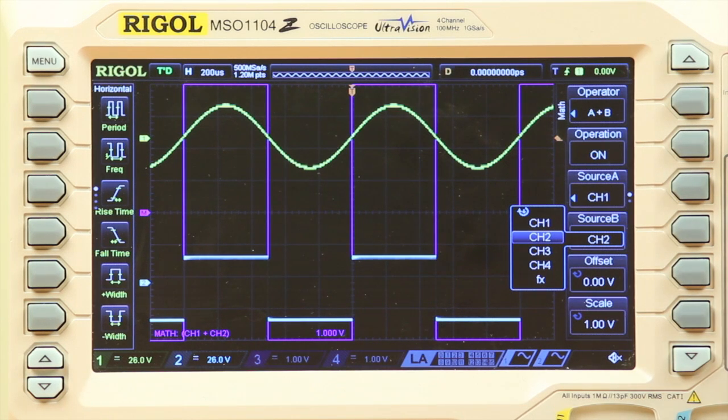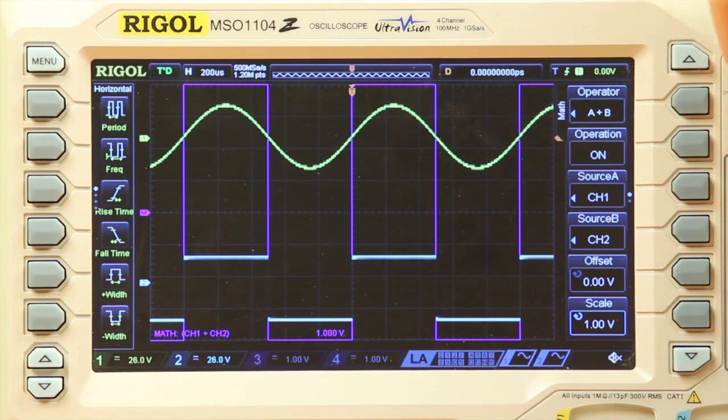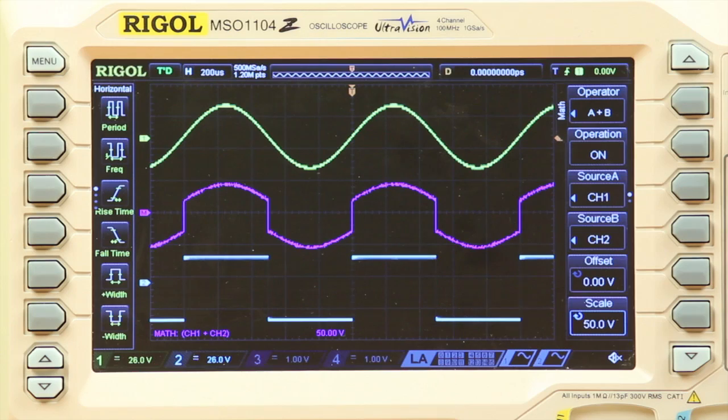Once this occurs, I have to change the scaling because it's a little off the screen. Right here we're actually showing the addition of channel 1 plus channel 2.